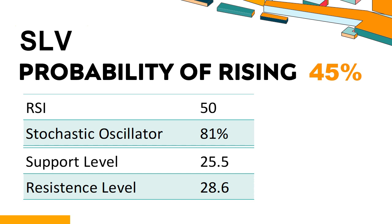What technical signals should you look for when analyzing SLV? SLV's 14-Day RSI value was 50. When the RSI is above 25 and below 50, it generally indicates that the stock is moderately bearish. This means the security's price has been falling but has not yet reached oversold levels, typically considered an RSI reading of 25 or lower.